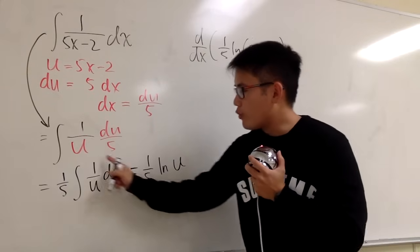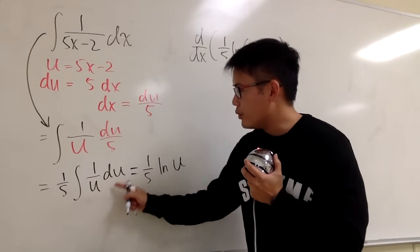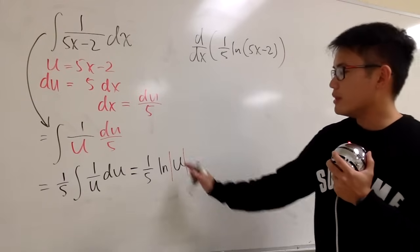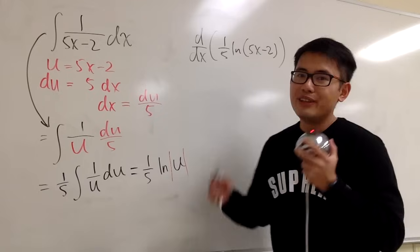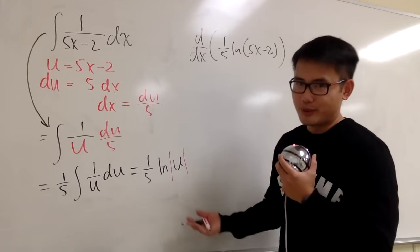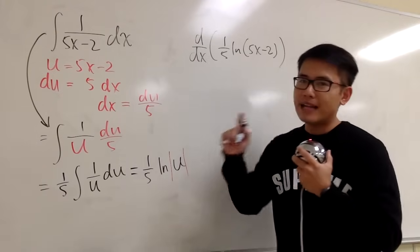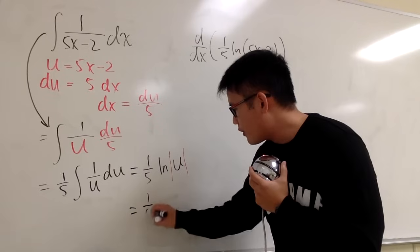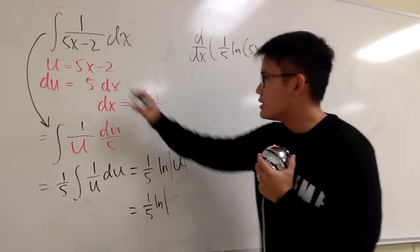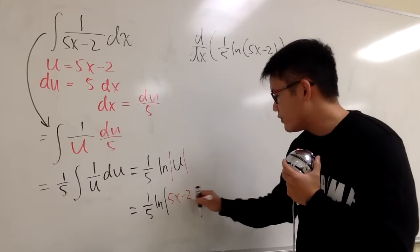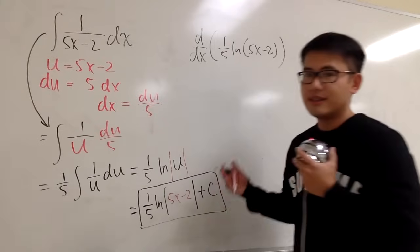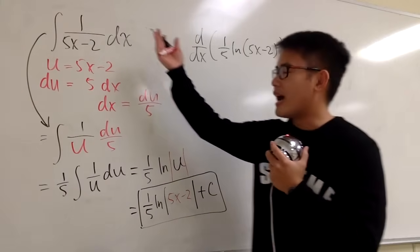Whenever we go from the integral of 1 over u du to the result, we have to attach an absolute value around the u — you can check my previous video for why. So we have 1 over 5 ln |u|. At the very end, take u back to x: u is 5x minus 2. So the final answer is 1 over 5 times ln |5x minus 2| plus c. That's the answer for that integral.